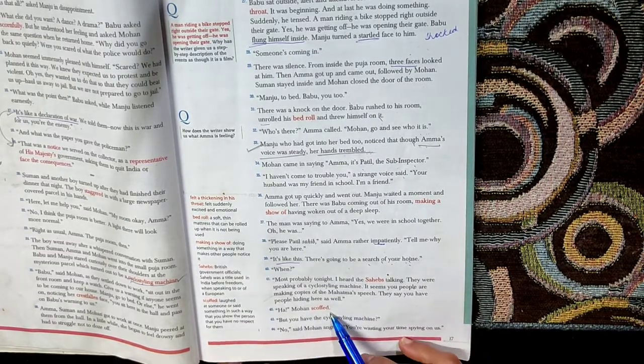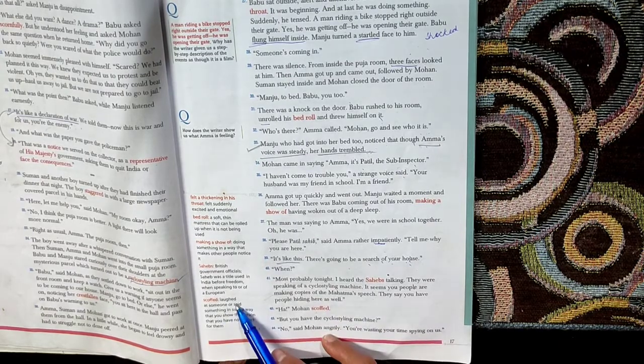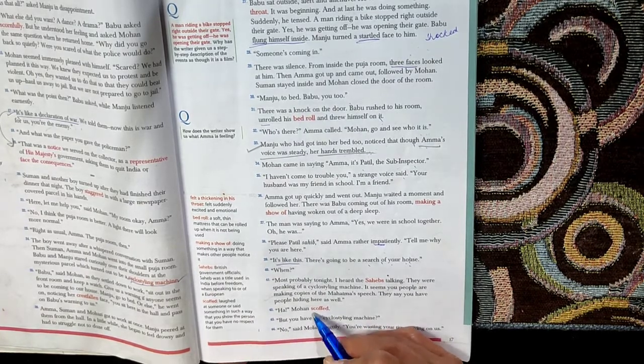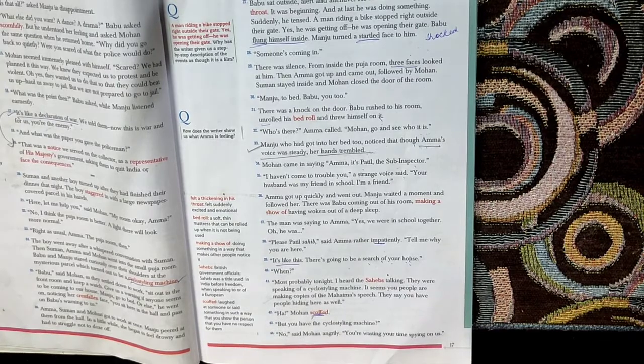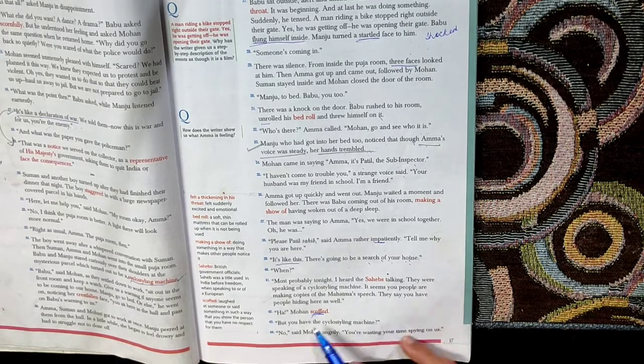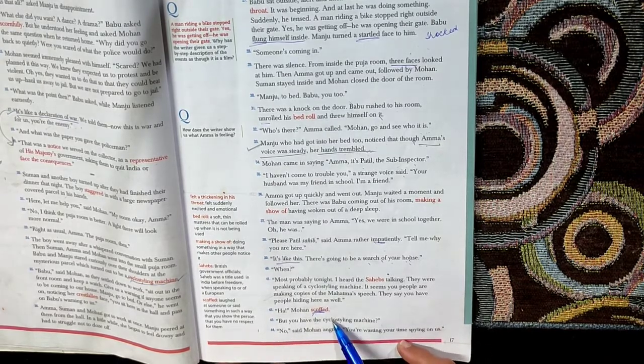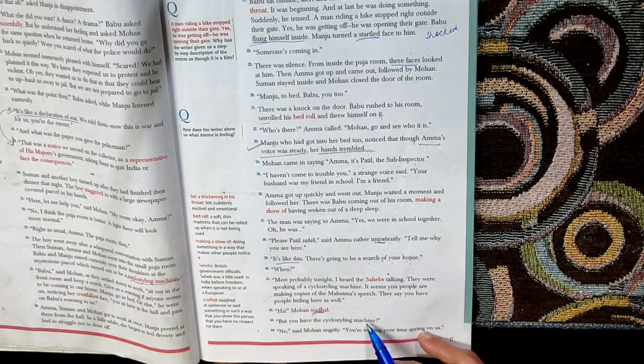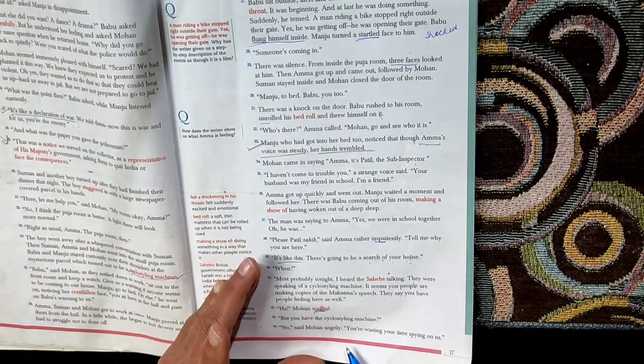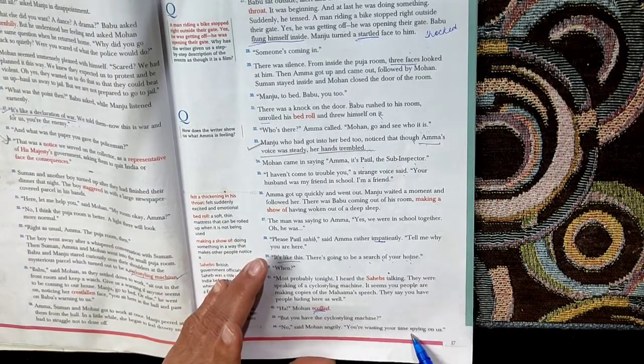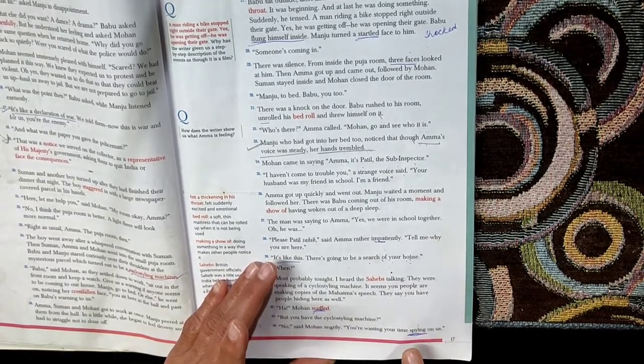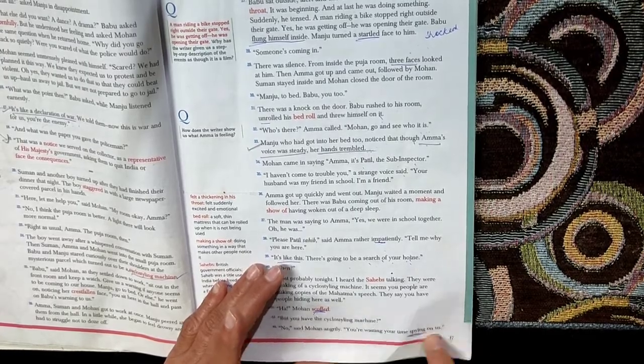Ha! Mohan scoffed. Scoffed is laughed at someone or said something in which you show that you have no respect for them. So it's kind of a ridicule. As though it's a lie. But you have the cyclostyling machine. Sub-inspector Patel continues. No, said Mohan angrily. So Mohan completely denies and says no. You are wasting your time spying on us. Spying is secretively gathering information.